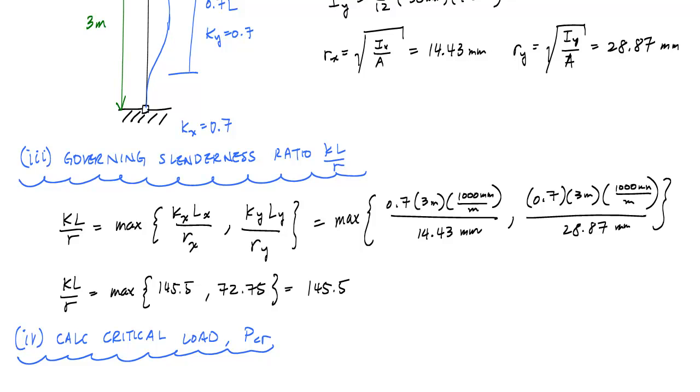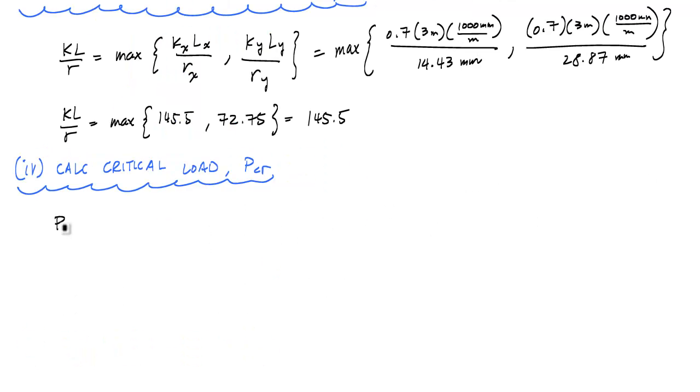So what's left for me to do now is actually just calculate the critical load using the Euler buckling formula. This PCR is going to be equal to, here's the formula, it's going to be equal to pi squared times the modulus of elasticity of this timber, which is 13 GPA or 13 kilonewtons per millimeter squared.